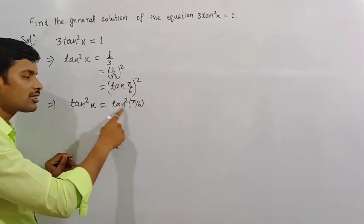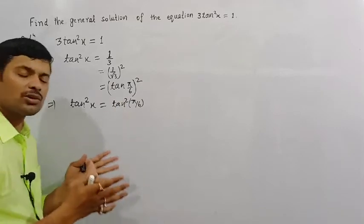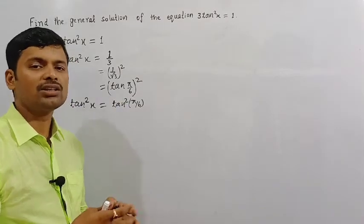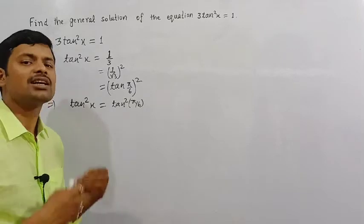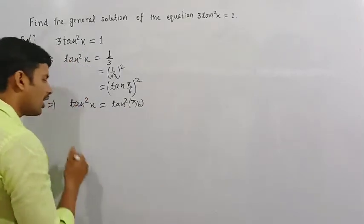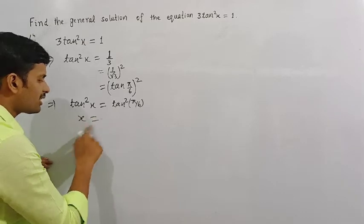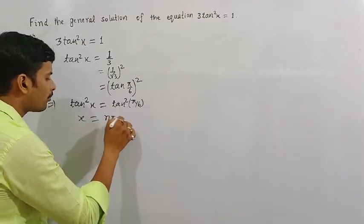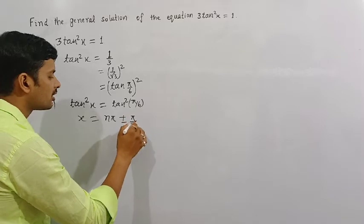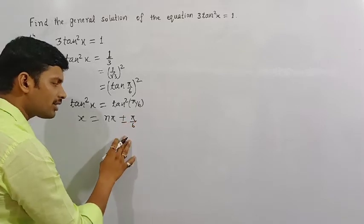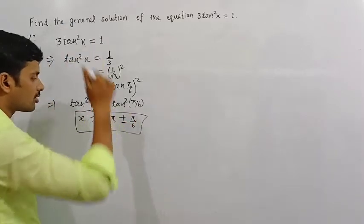The general solution of the form tan squared theta equals tan squared alpha is: theta equals n pi plus or minus alpha. So x is equal to n pi plus or minus alpha, where alpha is pi by 6. This is the general solution of the given equation.